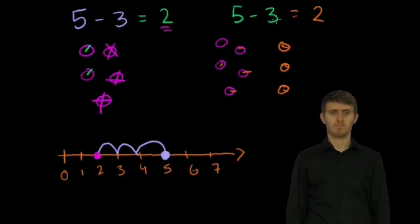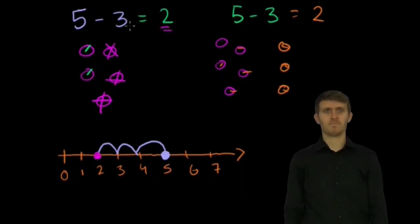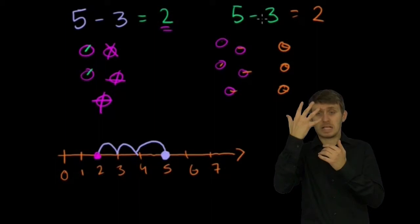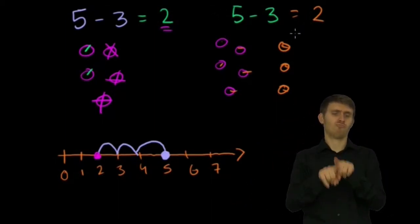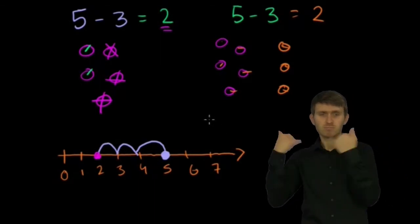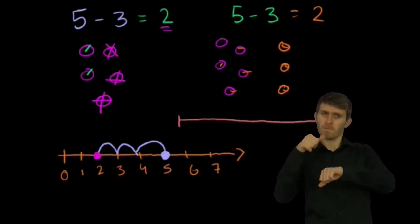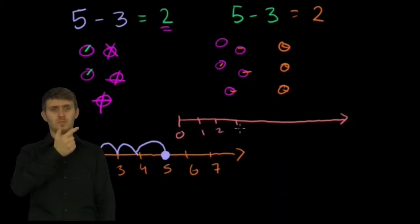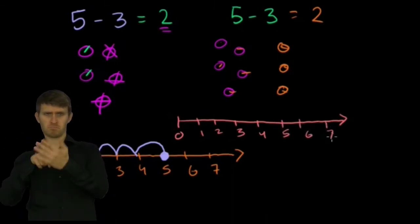Now if we visualize it from this point of view, let me draw another number line. And I wanted to show you, I mean this is taking away 3, and here I'm saying how many more is 5 than 3, even though they're the exact same answer. But there are two different ways to think about it. Let me draw a number line here again. I have 0, 1, 2, 3, 4, 5, 6, 7.